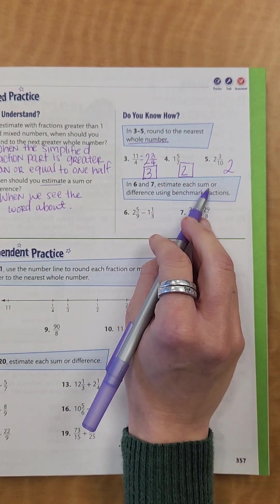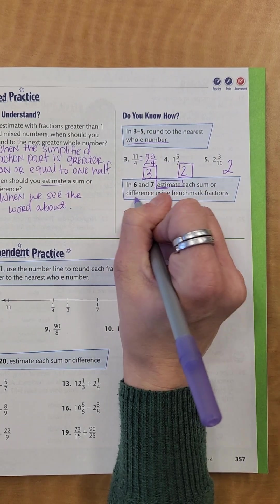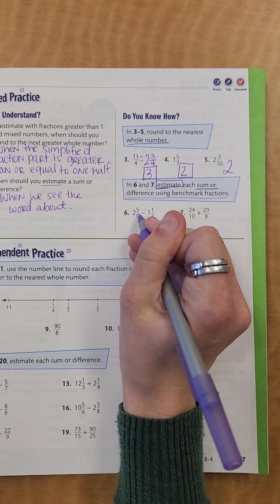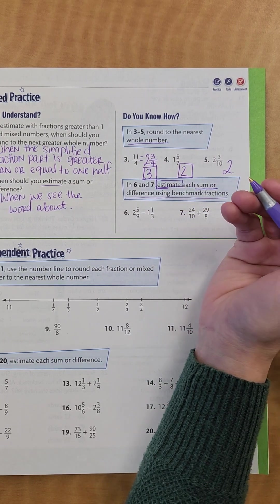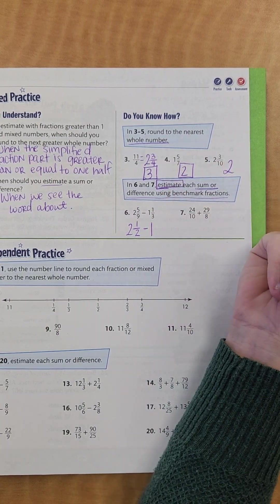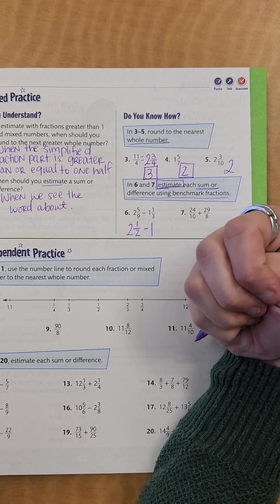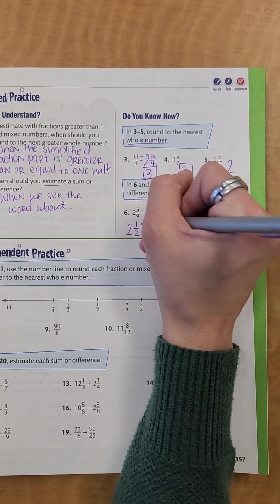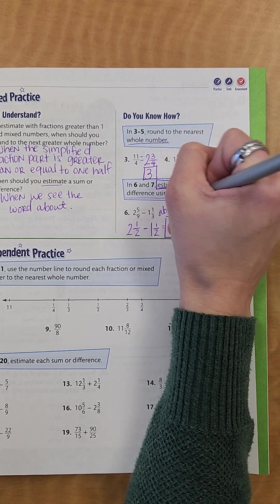All right, now I want you to do number 5 on your own, and you should have the number 2. All right, so now for 6 and 7, it says estimate each sum or difference using benchmark fractions. So we're going to estimate, let's box up that word estimate so we know that's what we're doing. Using benchmark fractions, you can find the sum or the difference, whichever one. So this one's going to be a difference, this one's the sum. So now, if I'm using benchmark fractions, I'm going to see that this right here, 5 ninths is about 1 half. So this would be 2 and 1 half, because it's about at that halfway point, minus 1. Now, this 1 third, you could go up to 1 half, or you can go down to 1. I would probably keep that at 1 half, because it's going to be bigger. So now, I know that 1 half minus 1 half is 0, and then 2 minus 1 is 1. So our answer would be about 1. And I want to make sure I put the word about, because it is an estimate.